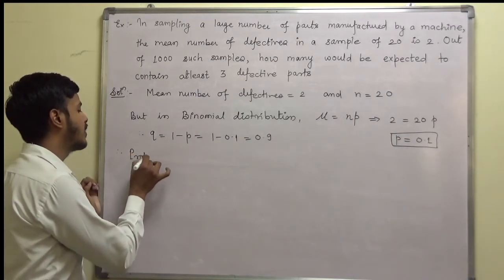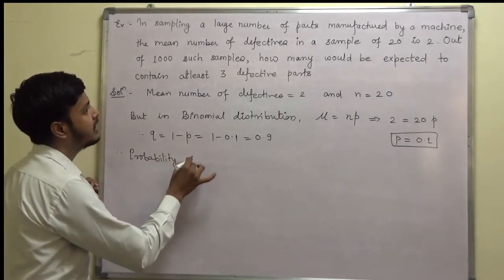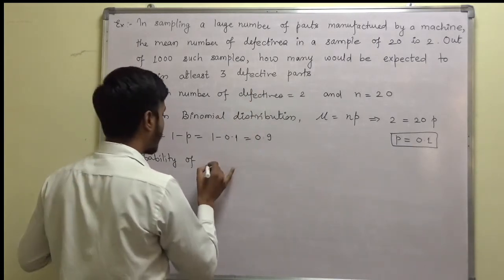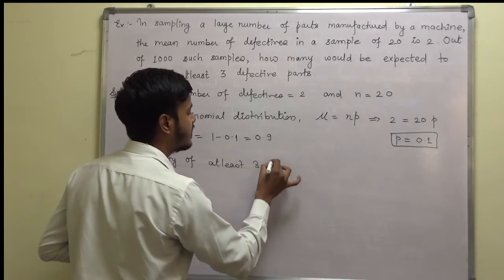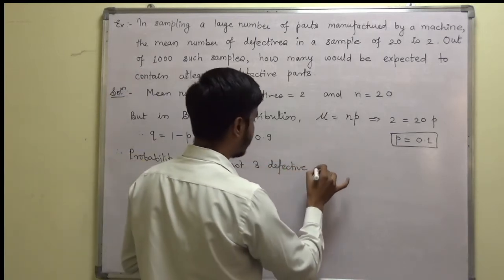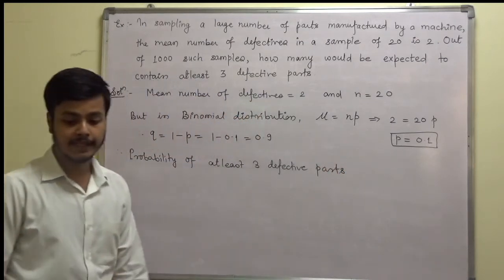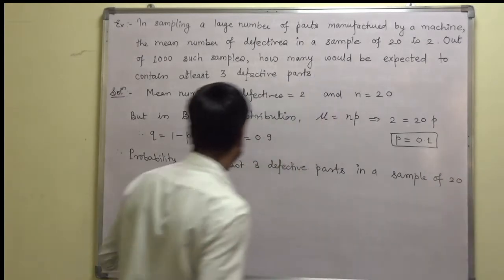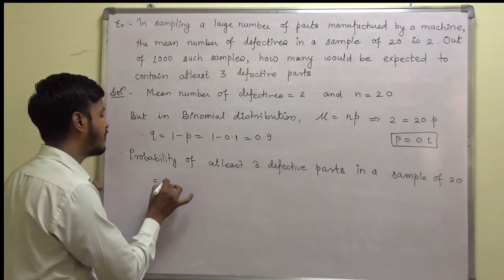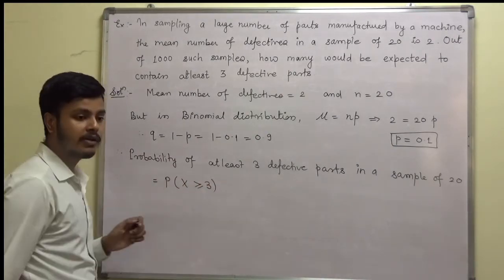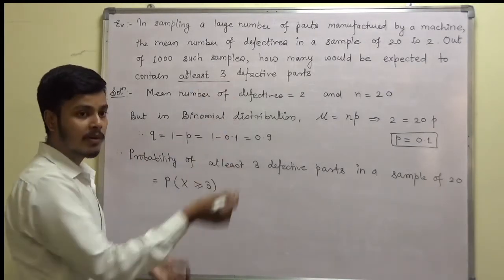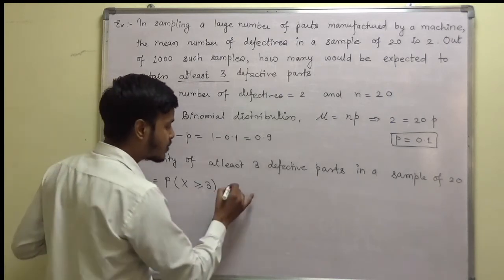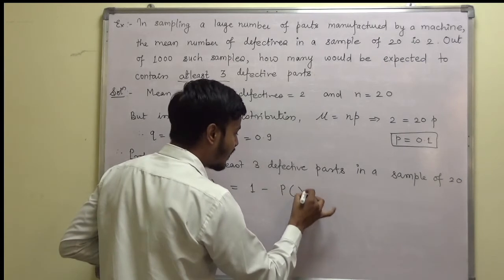Now what we have to find out is the probability of at least 3 defective parts in a sample of 20, which is the probability of x greater than or equal to 3. This can also be written as 1 minus probability of x less than 3.